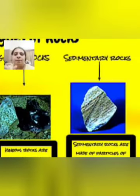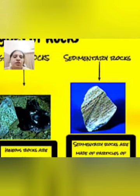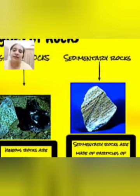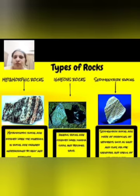Next is sedimentary rock. The word comes from 'sediment' — small particles of sand and clay that settle under conditions of heat and pressure, sometimes at the bottom of the sea. When these sediments settle, the rocks that form are known as sedimentary rocks. So in total, we have metamorphic, igneous, and sedimentary rocks.